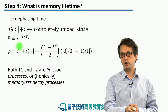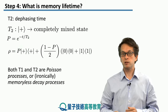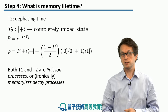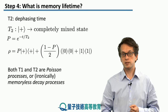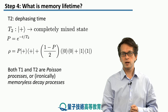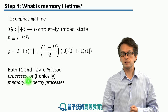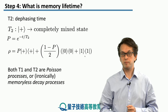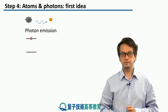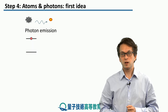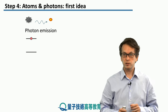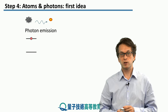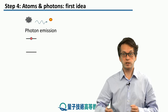This probability is given by e to the negative T over T2. Both the relaxation process and the dephasing process are Poisson processes — somewhat ironic, since we're talking about memories, but these processes are memoryless decay processes. So we've talked about the lifetimes of memories and why they are important, and given some characteristic timescales which are very important when talking about communication over longer distances.